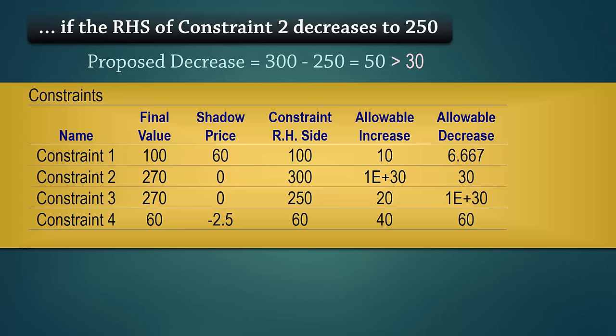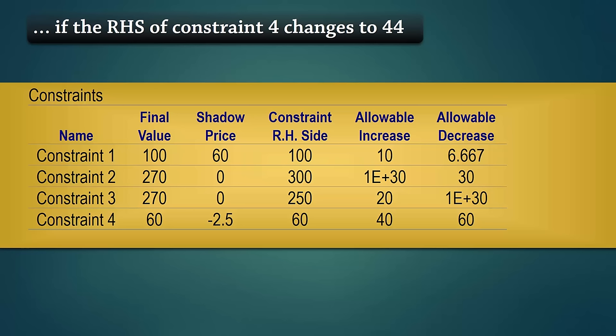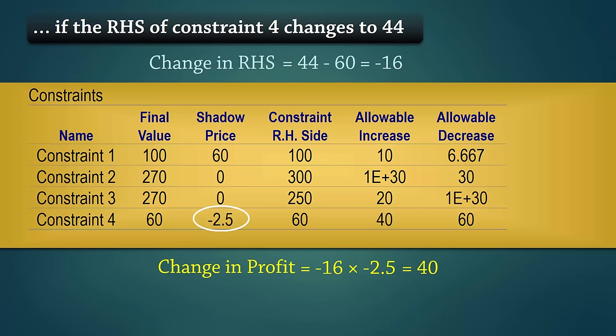Next, how will the objective function change if the right hand side of Constraint 4 changes to 44? The current right hand side value for Constraint 4 is 60. Changing it to 44 represents a decrease of 16 units, which is less than the allowable decrease of 60. Therefore, the shadow price applies and the total profit changes by negative 16 times negative 2.5 to give 40. Since this value is positive, optimal profit will actually increase by 40 to become 5890.